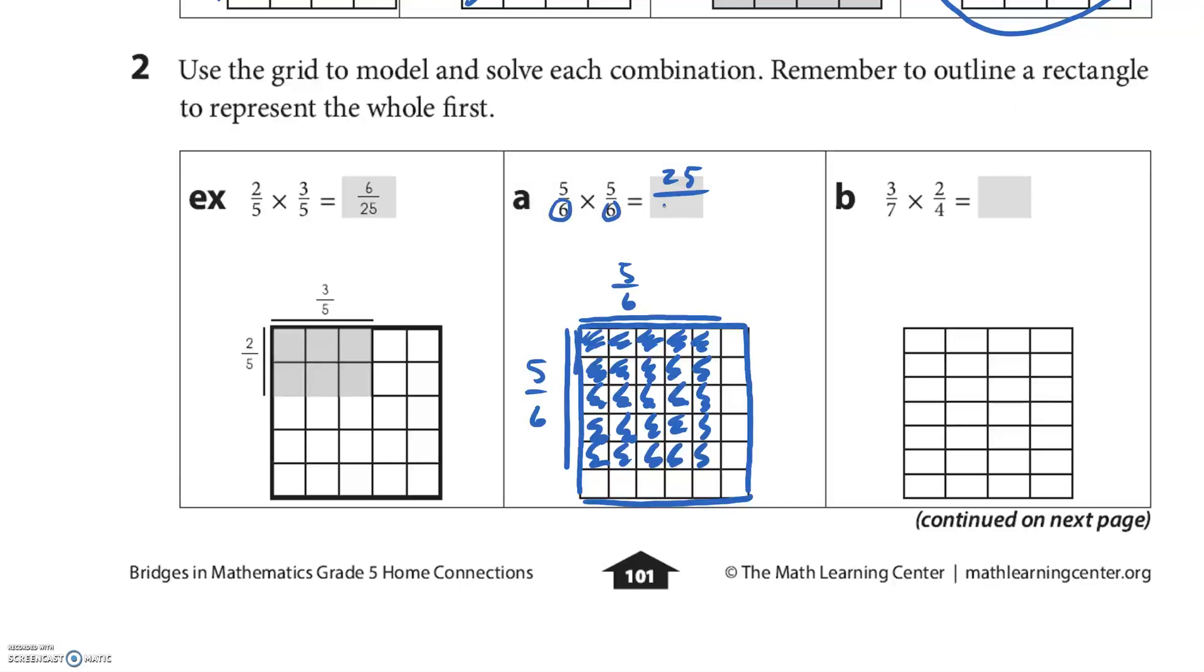Then we just color them in. 1, 2, 3, 4, 5, 6, 7, 8, 9, 10, 11, 12, 13, 14, 15, 16, 17, 18, 19, 20, 21, 22, 23, 24, 25.